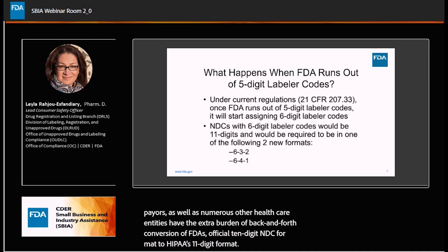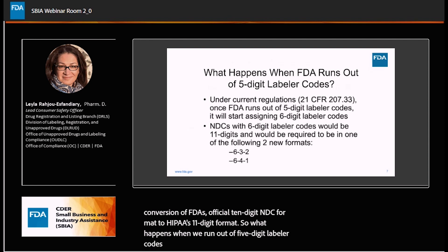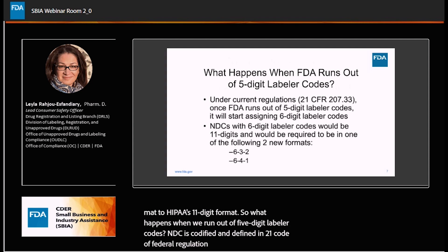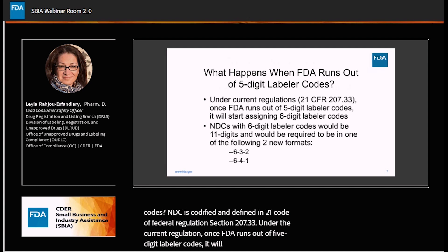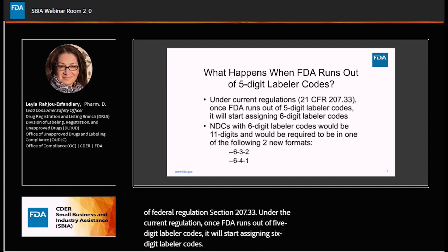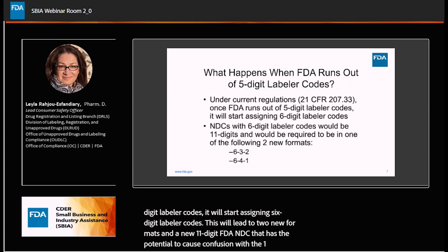So, what happens when we run out of five-digit labeler codes? NDC is codified and defined in 21 Code of Federal Regulation, Section 207.33. Under the current regulation, once FDA runs out of five-digit labeler codes, it will start assigning six-digit labeler codes. This will lead to two new formats and a new 11-digit FDA NDC that has the potential to cause confusion with the 11-digit HIPAA-converted NDC.